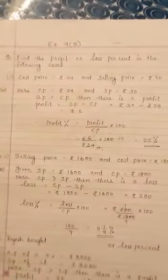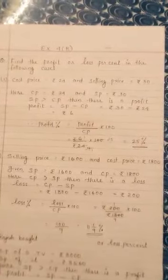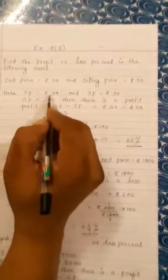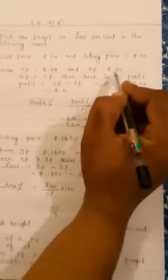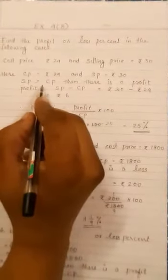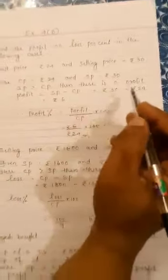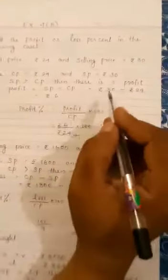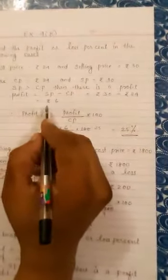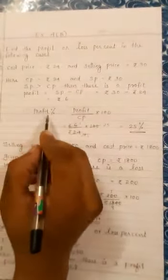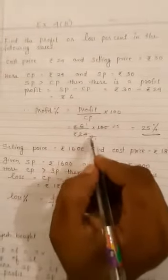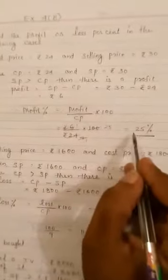Let us start the questions. First, find the profit or loss percent in the following cases. Case one: cost price is equal to 24 rupees and selling price is equal to 30 rupees. Since the selling price is greater than the cost price, there is a profit. Profit equals 30 minus 24, which is 6 rupees. Therefore, profit percentage equals 6 upon 24 multiplied by 100, which is 25%.